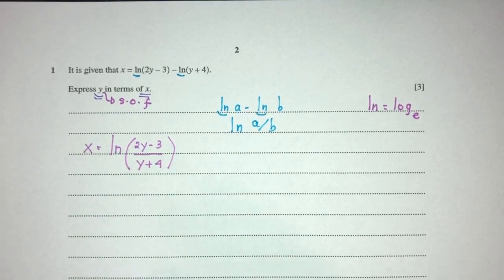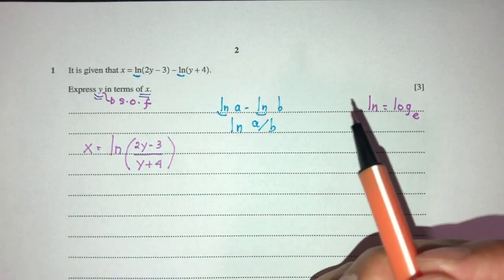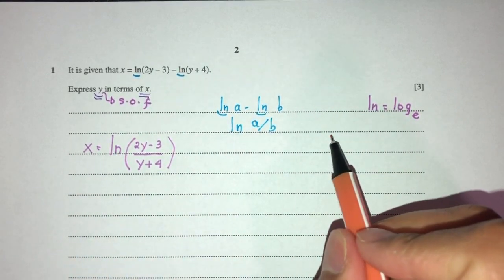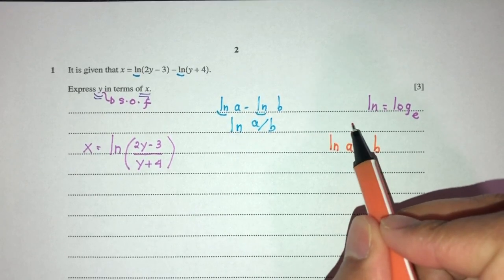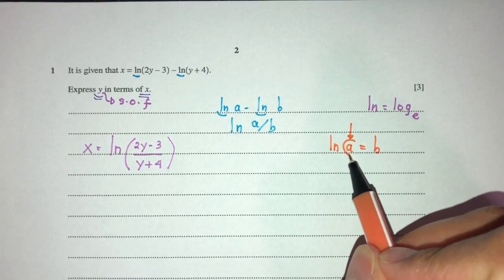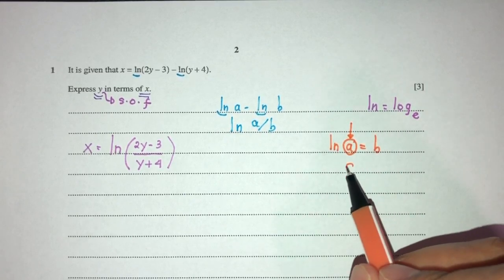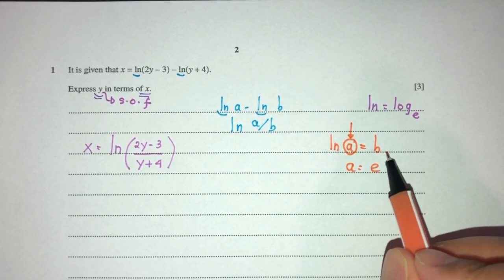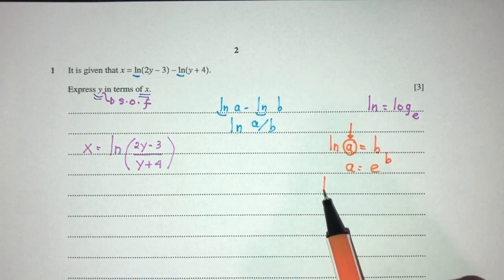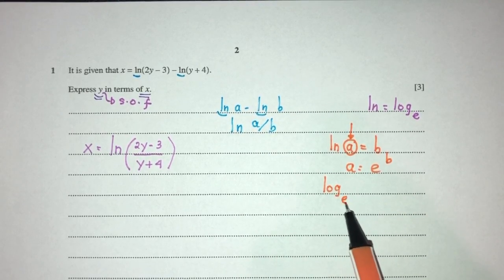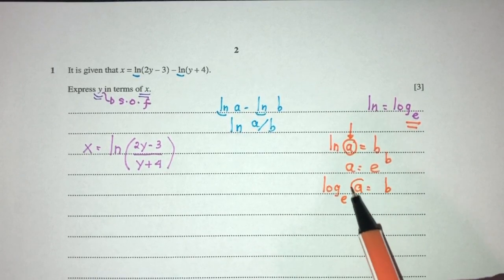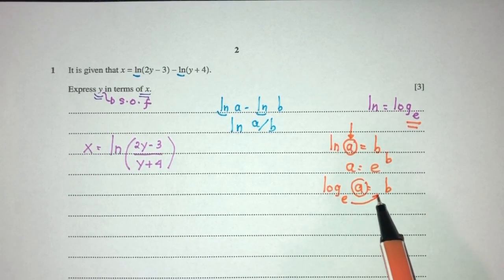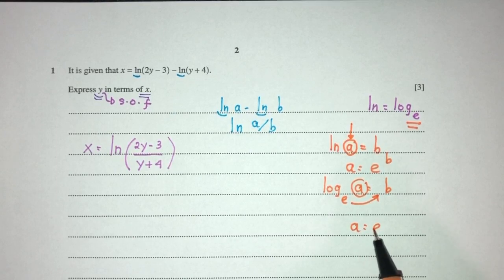Now, to express y in terms of x, we first have to simplify this whole thing. For example, if I tell you ln of A equals B and I want to find the value of A, it's pretty simple — A is equal to e^B. Because ln is simply log to the base of E, to find the value inside, we send the base over, so A equals e^B.